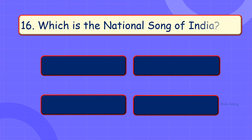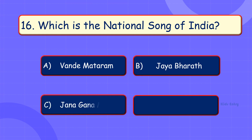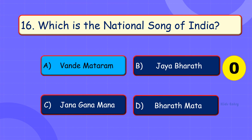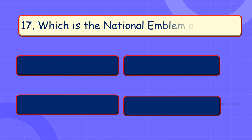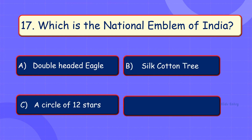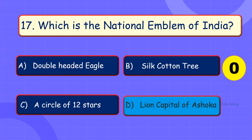Which is the national emblem of India? A. Double-headed eagle. B. Silk cotton tree. C. A circle of 12 stars. D. Lion capital of Ashoka. Answer is Option D: Lion capital of Ashoka.